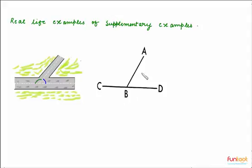Here we have a linear pair, and we know that in a linear pair, the sum of this angle and this angle will be 180 degrees. So these two angles are also an example of supplementary angles.